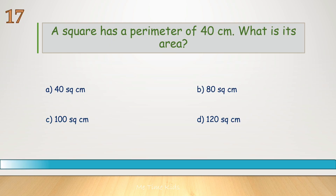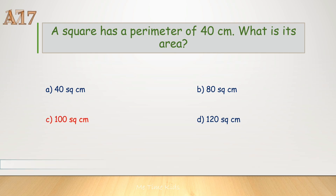A square has a perimeter of 40 centimeters. What is its area? Correct answer is C, 100 square centimeters.